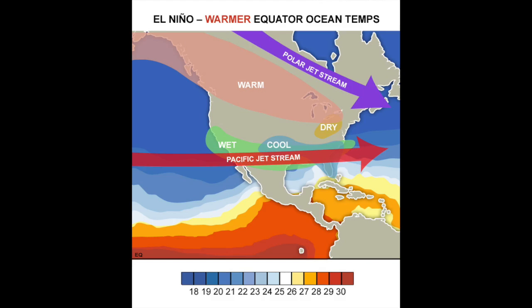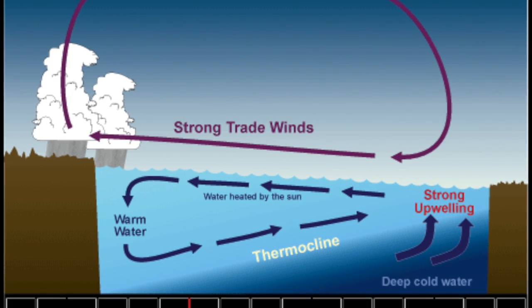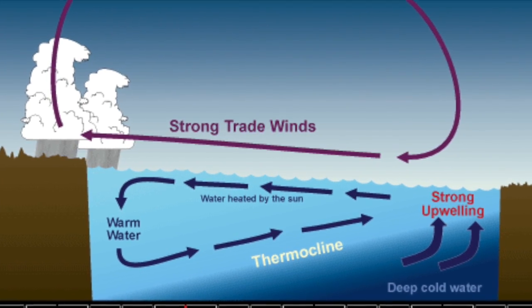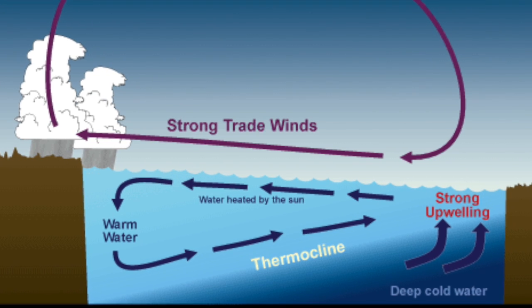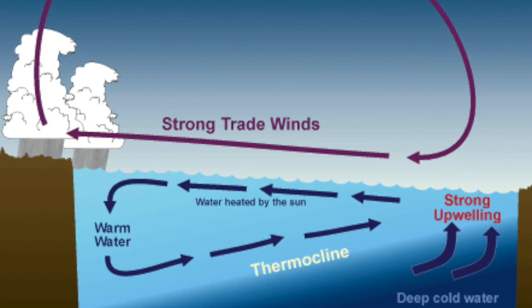Usually there are strong trade winds blowing west that cause an upwelling, bringing nutrients to the euphotic zone. The winds can also affect climate, such as increased precipitation over Indonesia and dry weather at the South American coast.